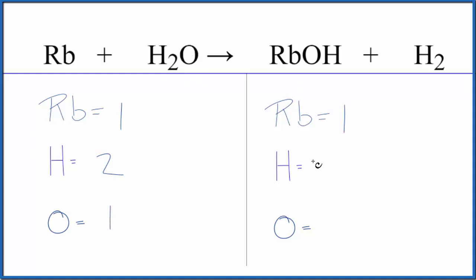Product side, one rubidium. We have one hydrogen here plus the two here. Don't forget those. Three. And just one oxygen atom.